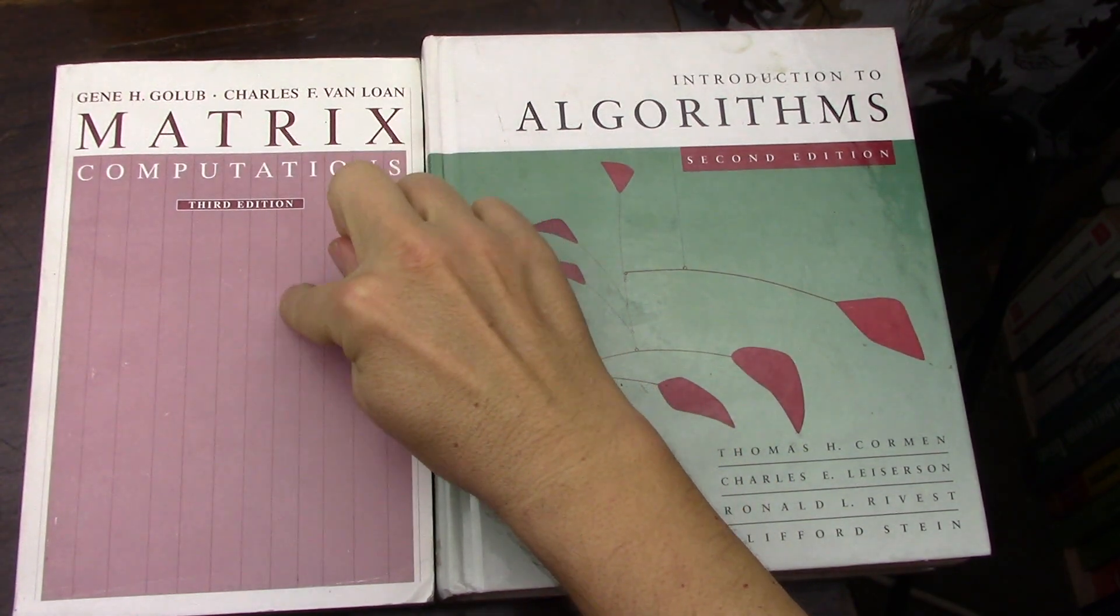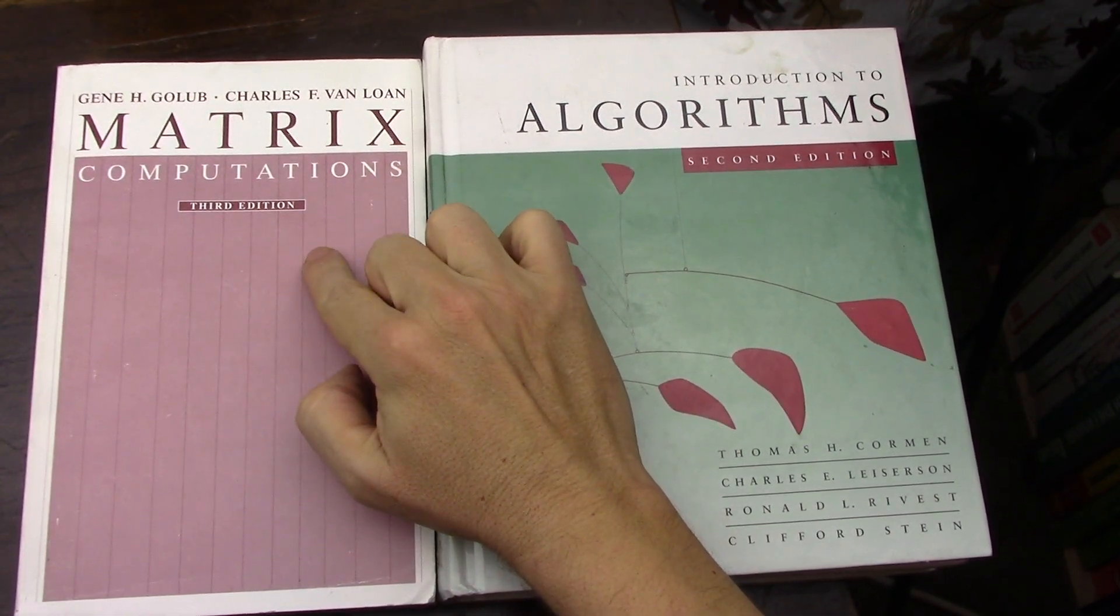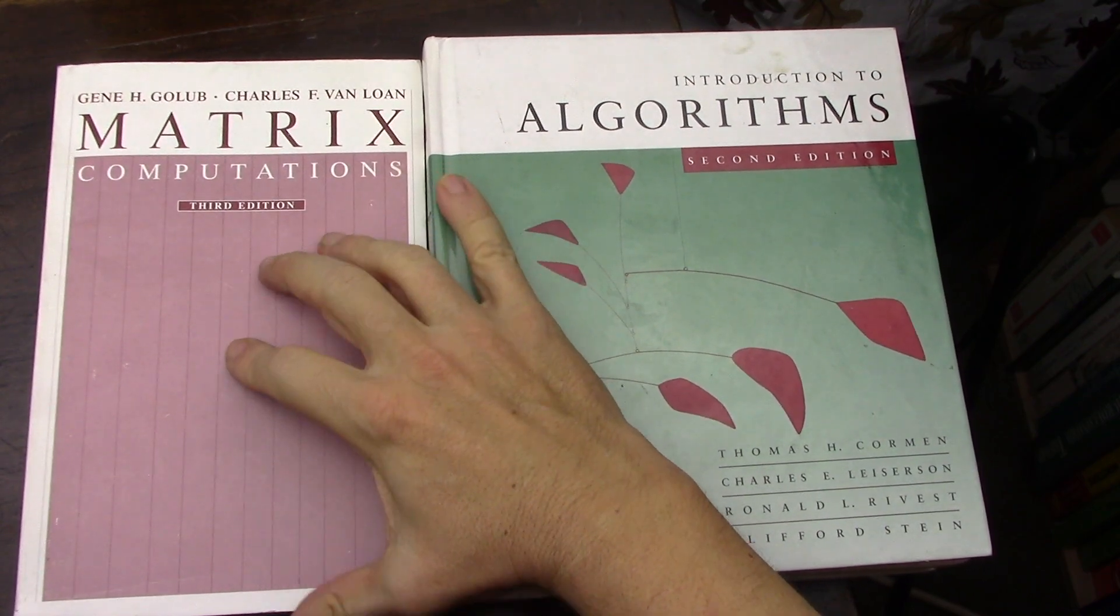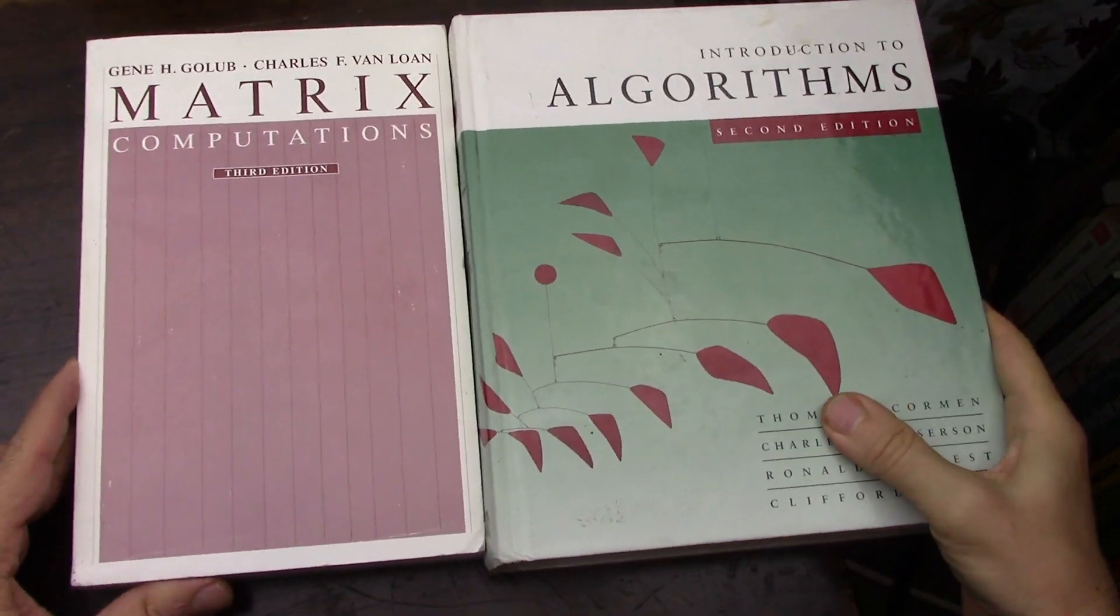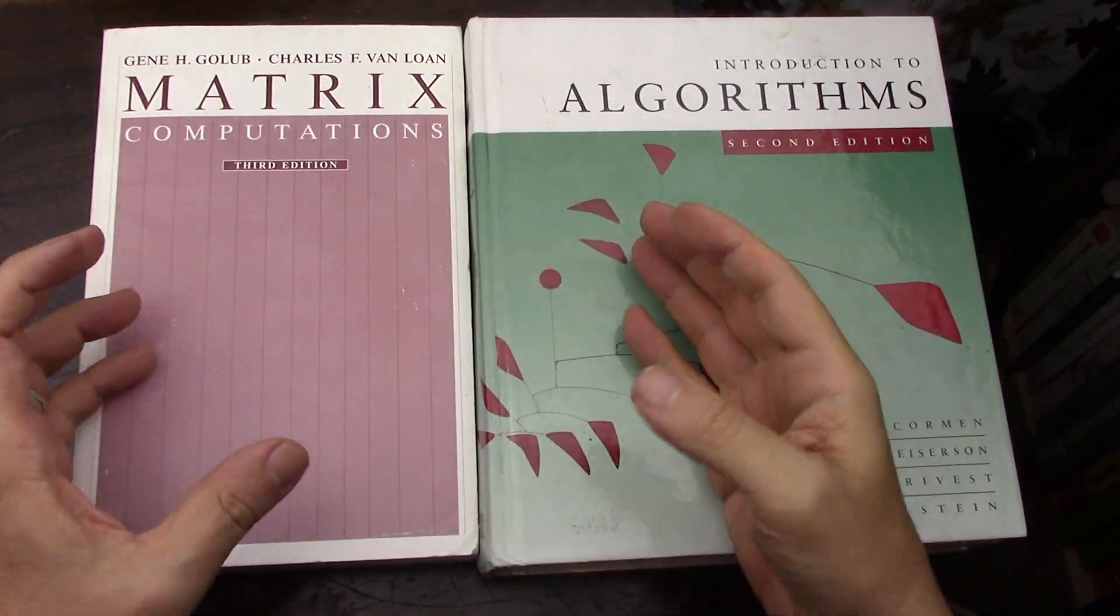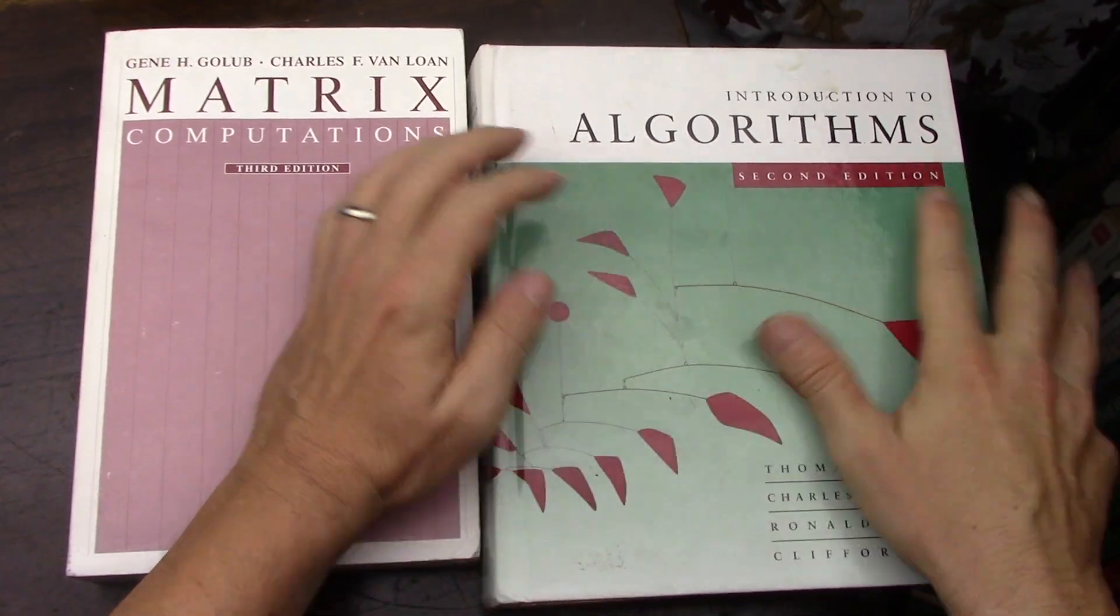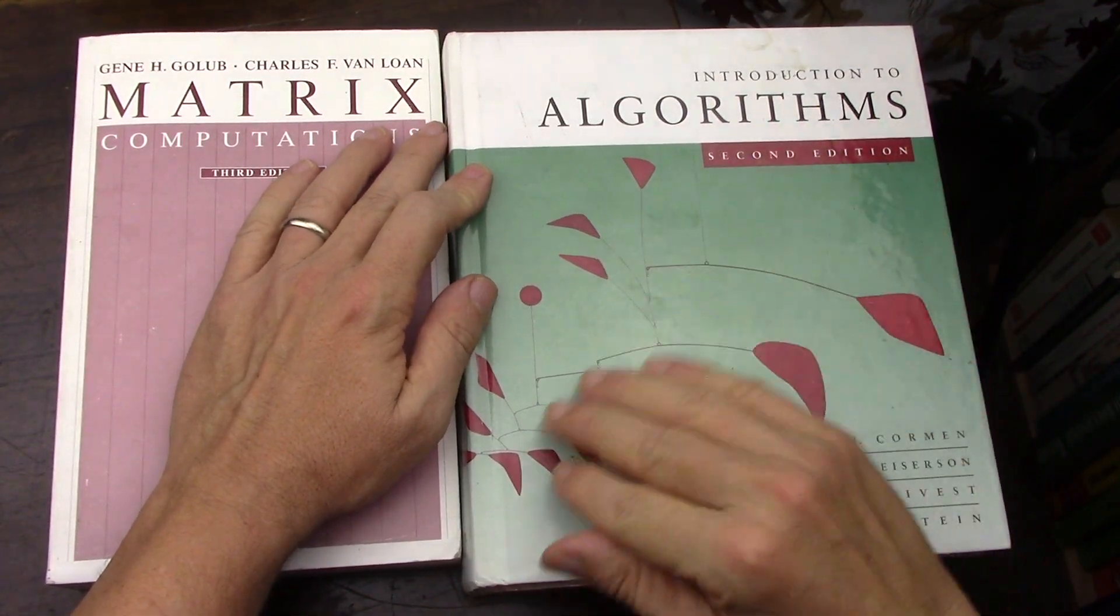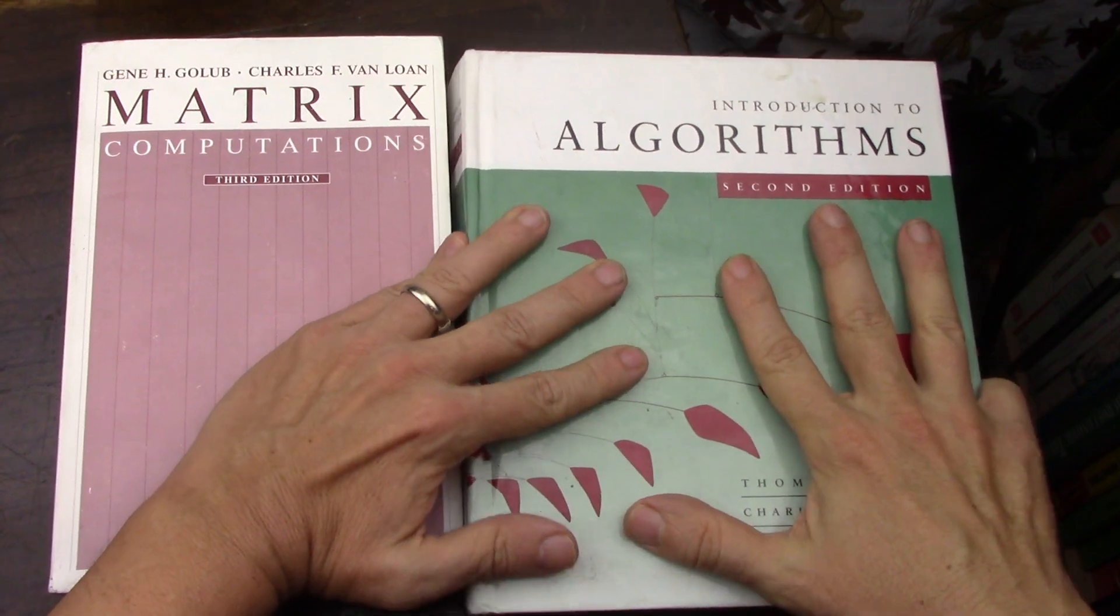I was going to make this video only about this book, which is a matrix linear algebra book for the applied folks, a computational linear algebra book. But when I went through it, it looked so much like the big MIT algorithm book, and I didn't want to make a video about this book alone.